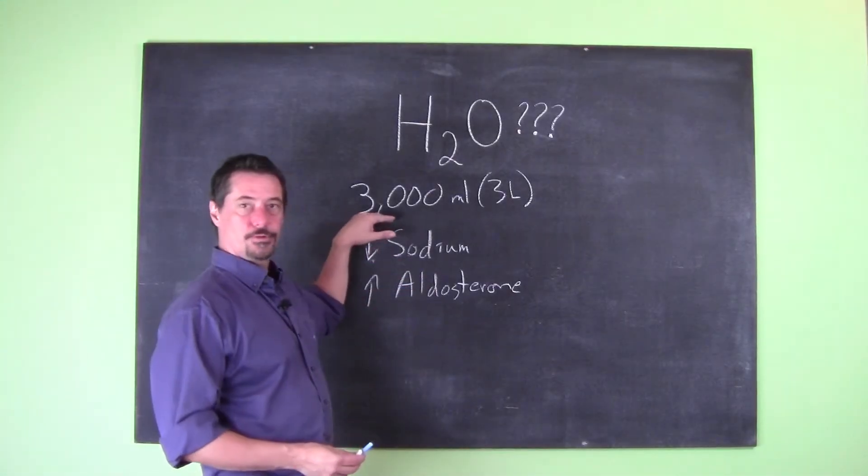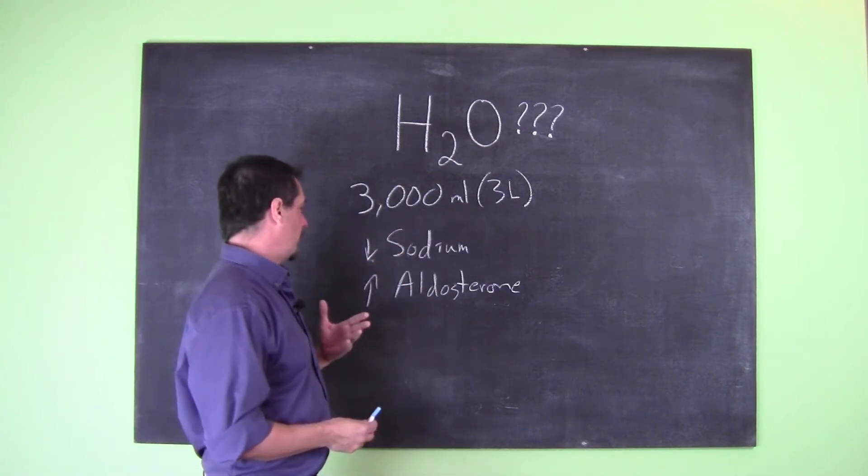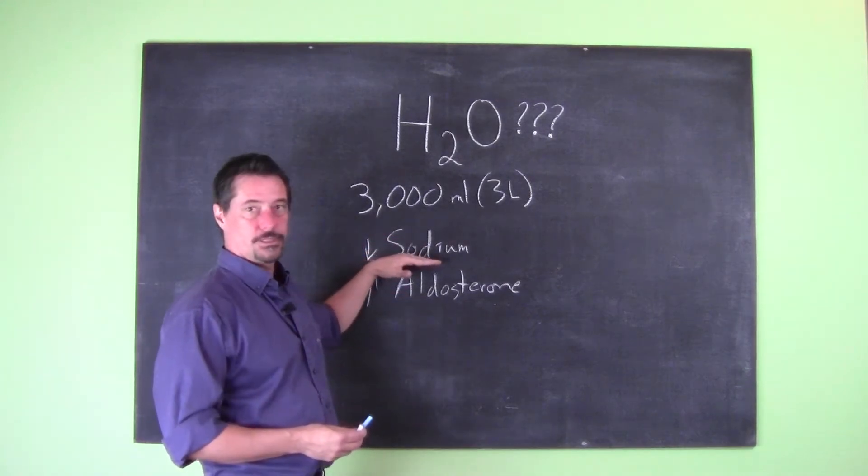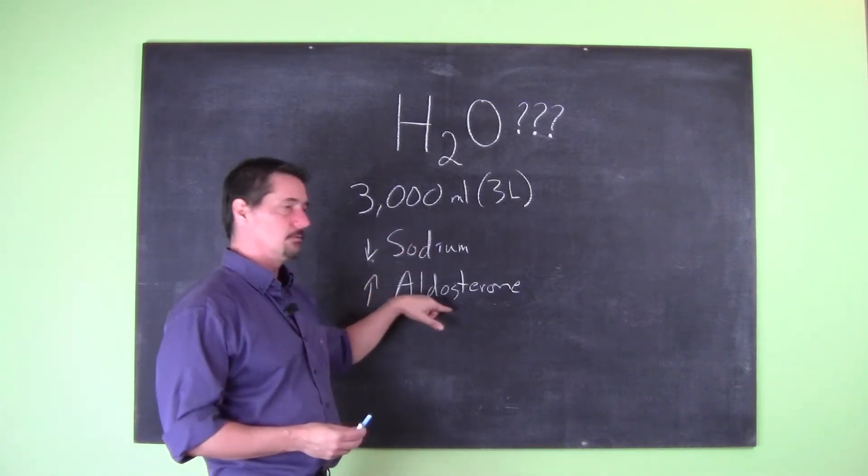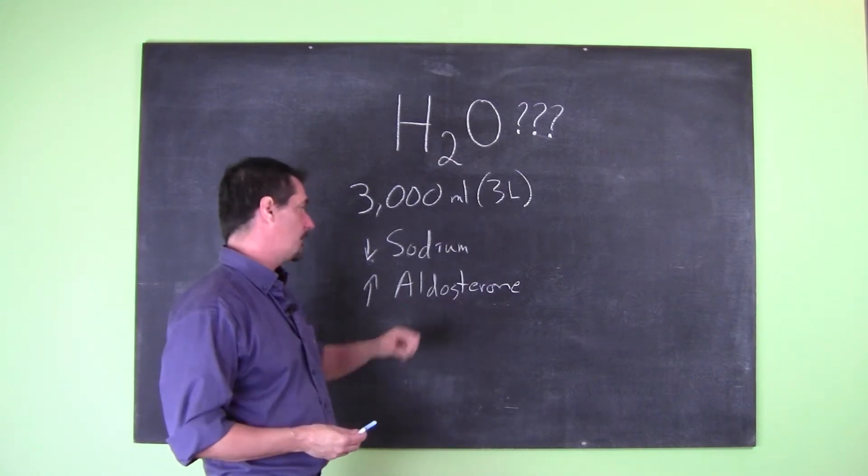So if you were to drink more than 3,000 milliliters, or more than three liters of water a day, what can happen is that will decrease the amount of sodium in your blood. And when sodium goes down, what's going to happen is your aldosterone, which is a hormone that regulates blood sodium and a few other things, is going to go up.